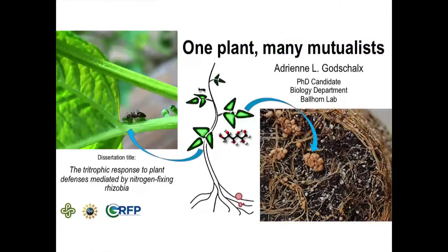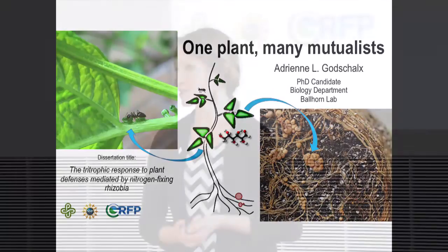Bean plants form a symbiotic relationship with nitrogen-fixing bacteria called Rhizobia. They live in plant roots and fix nitrogen, making a source of fertilizer available to the plant made in-house. Plants with this relationship grow bigger and have more protein-rich tissues, which is why beans are an important source of protein. But the added nutrients also affect the rest of the plant's physiology, impacting their secondary metabolism or plant defenses.